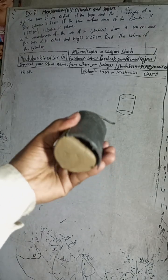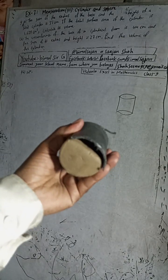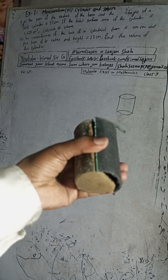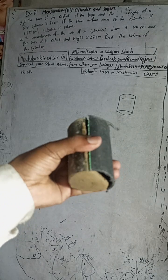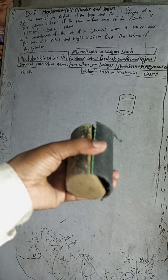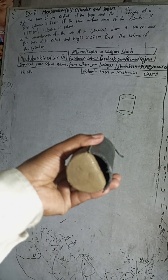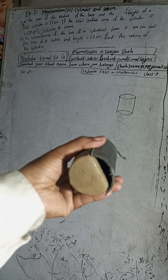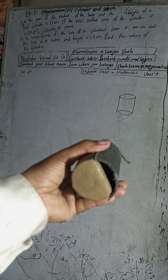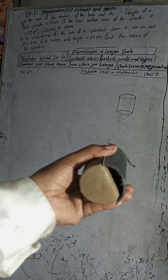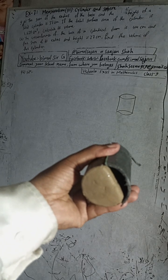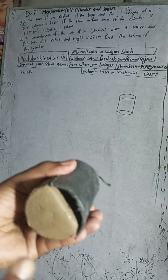Hi class 9 and 10 students, welcome back to Bimalsarji's YouTube channel. This is question number 9b, exercise 7.1, mensuration third part — cylinder and sphere. In this YouTube channel, check the playlist and you will get a lot of solutions. The question 9b is: the circumference of the base of a cylindrical drum is 44 cm.